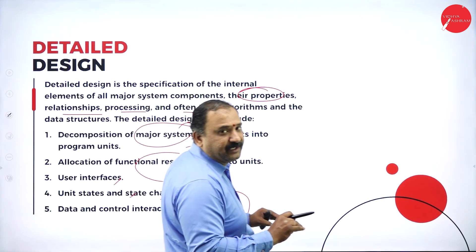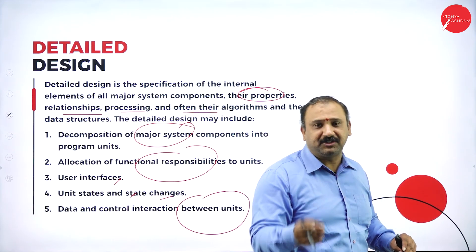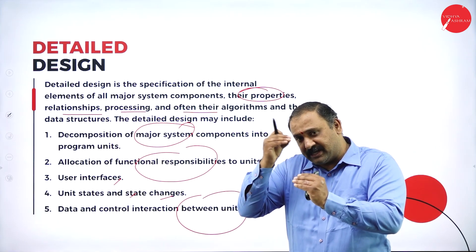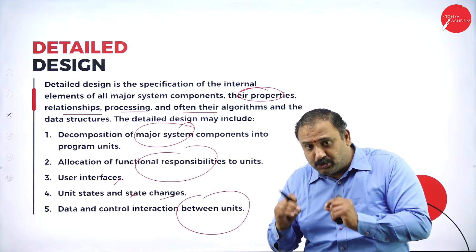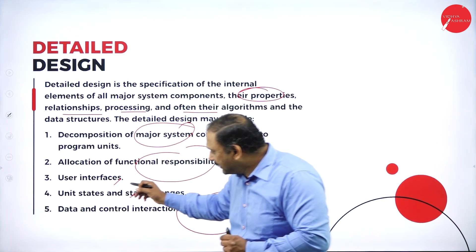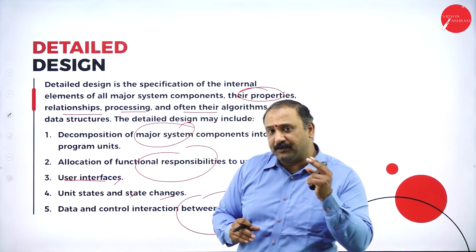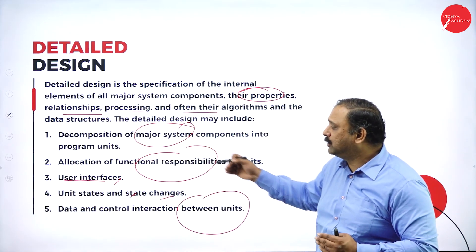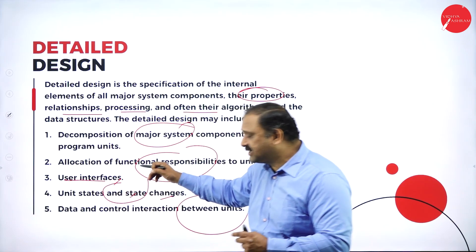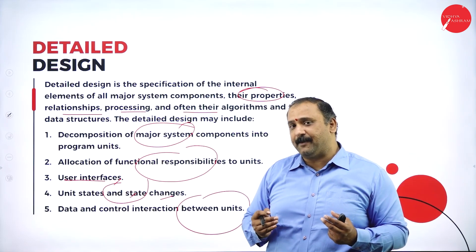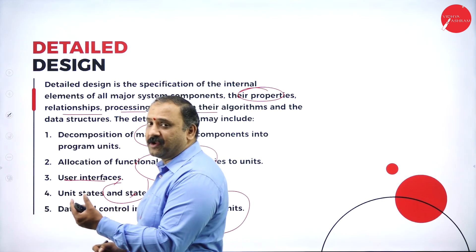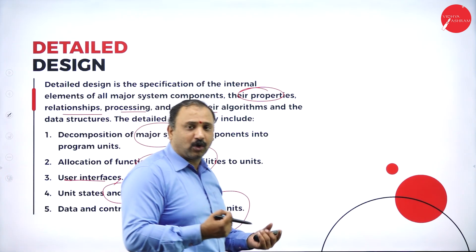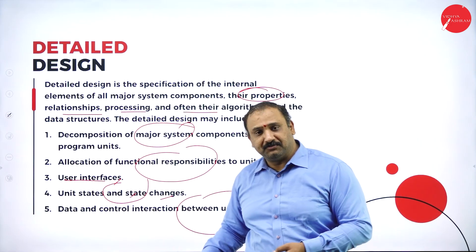Allocation of functional responsibilities to the units is very important — how this function is going to happen, which function has to be called, and what the use of the function is. Then come user interfaces: what are all the points at which the user will interact with the system? Unit states and the changes happening within those states, and the data and control interaction between units — when multiple units talk and exchange values — all come into picture.